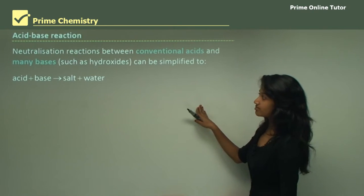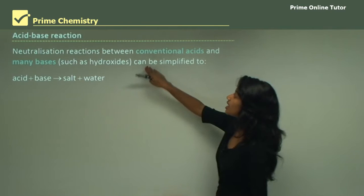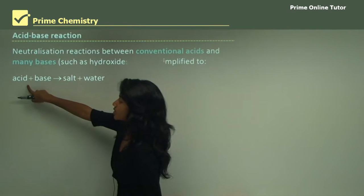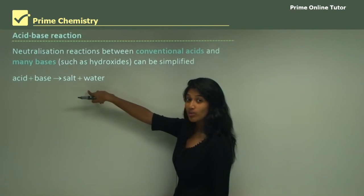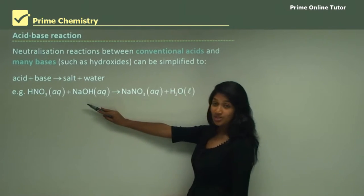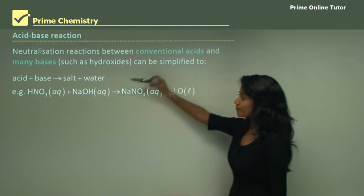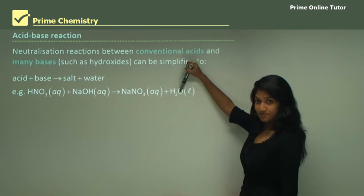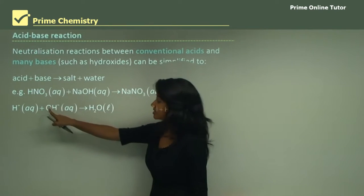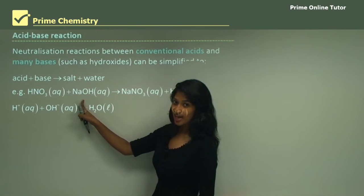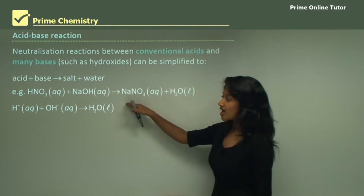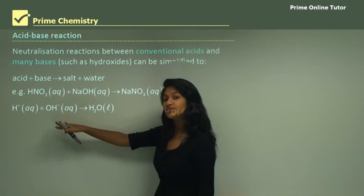In an acid-base reaction — in other words a neutralization reaction — the conventional acids and bases react such that an acid and a base produce a salt and water. For example, nitric acid reacting with sodium hydroxide forms sodium nitrate and water. The hydrogen ions from the nitric acid and hydroxide ions from the sodium hydroxide produce the water in the reaction.